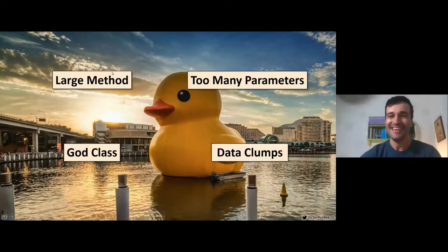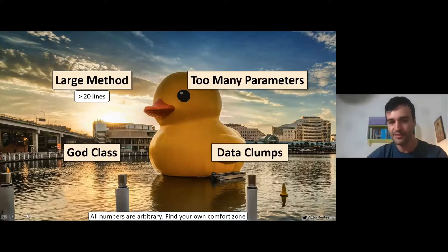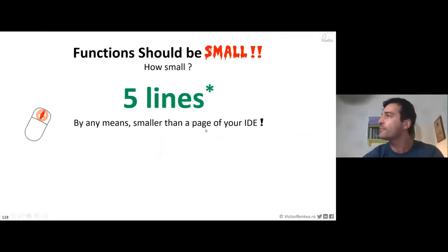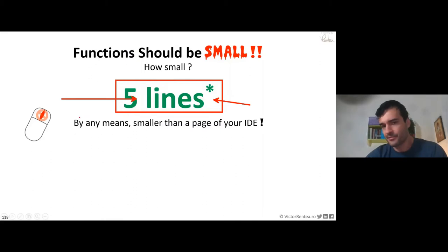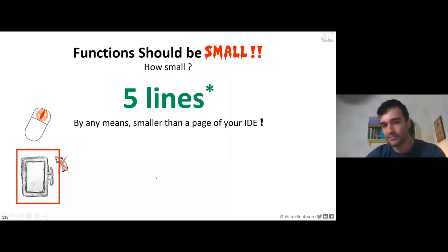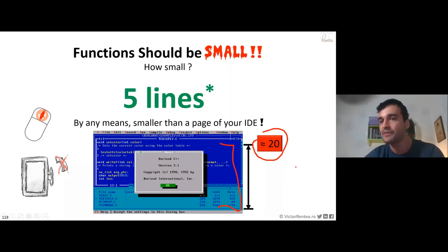First: a large method. Typically a method larger than 20 lines kind of stinks — you need to break it down. To be more precise, the more complex a method is, the shorter it should be. The number 20 comes from way back. Uncle Bob would say five lines or even shorter. The reasonable idea is to keep it smaller than a screen — meaning 20 lines, the amount of things that fit in a human's mind easily.